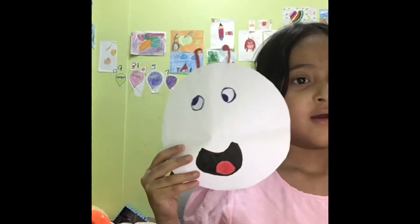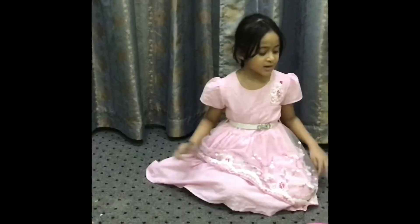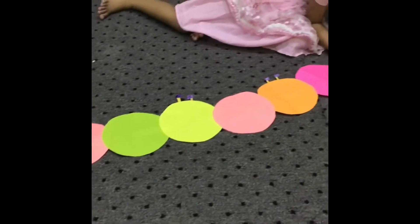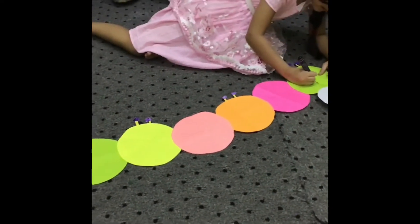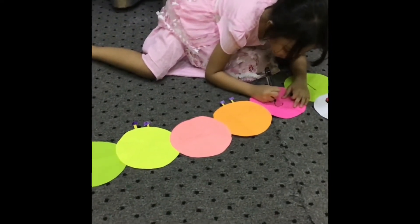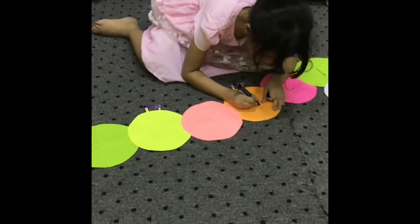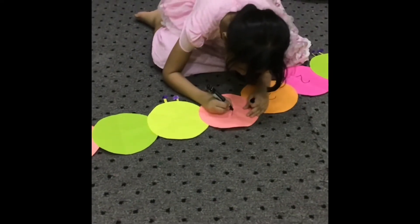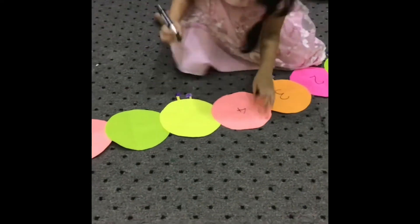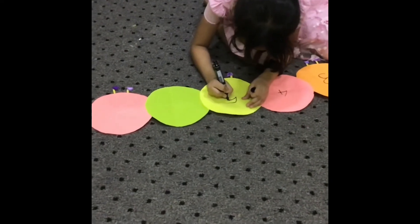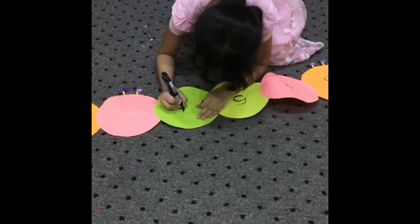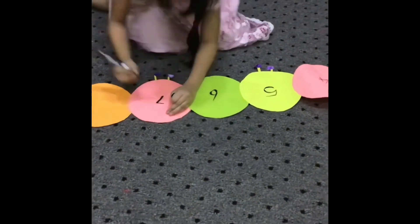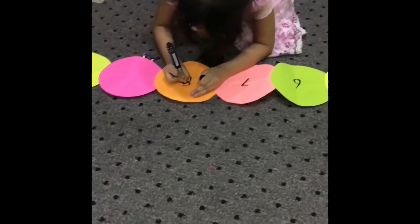Okay now so guys my caterpillar face is ready so let's move on to the body. So guys look at my huge caterpillar so I'm going to write the numbers. Seven, six, seven, eight, eight, nine.